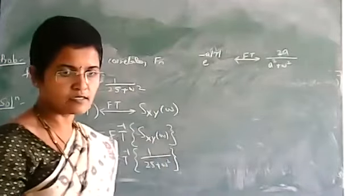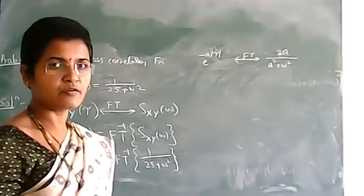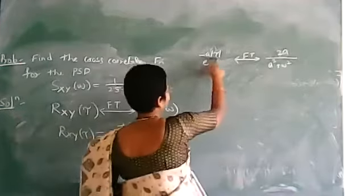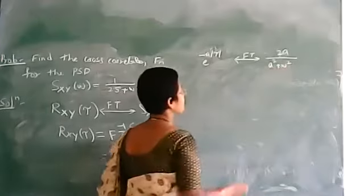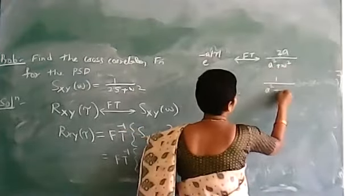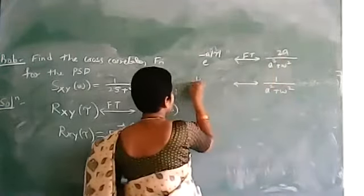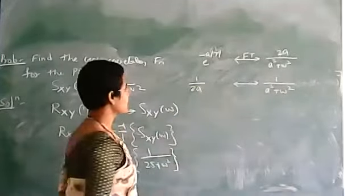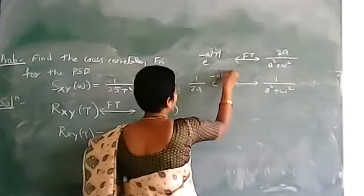In signals and systems we use the variable t, whereas here we use the variable tau. So e to the power of minus a mod tau has the Fourier transform 2a by a squared plus omega squared. Since we have 1 by a squared plus omega squared, we move 2a to the left side, giving 1 by 2a times e to the power of minus a mod tau.